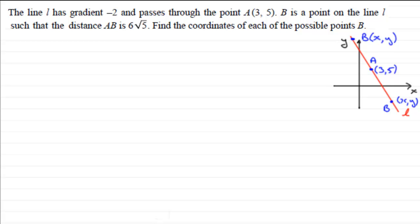Now how do we get these points x, y? Well, the first thing I notice is that we'll work off the idea that the gradient is minus 2, and develop an equation linking the points x, y to the coordinates of A. Then we'll also look at the distance AB being 6 root 5, form another equation involving x and y, and then we'll have simultaneous equations that we should be able to solve.